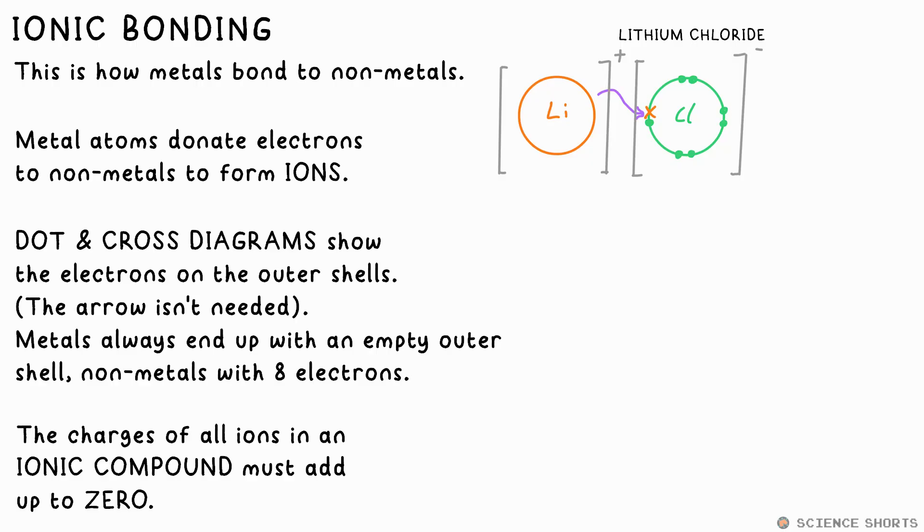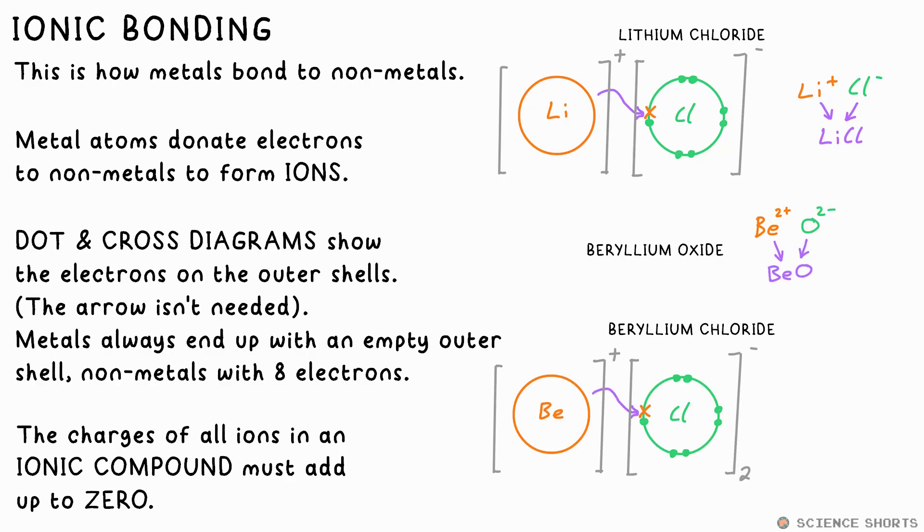When it comes to ionic bonding, the charges of all ions in an ionic compound must add up to zero, so Li plus and Cl minus is all good, so this is the chemical formula for lithium chloride. The same with beryllium oxide, Be2 plus and O2 minus, so it's just BeO. Beryllium chloride on the other hand, well, the beryllium needs to lose two electrons, while a chlorine atom only needs one, so that means there must be two chlorines or chloride ions for every beryllium. So Be2 plus and two lots of Cl minus add up to zero, so that means the chemical formula is BeCl2. Sorted.